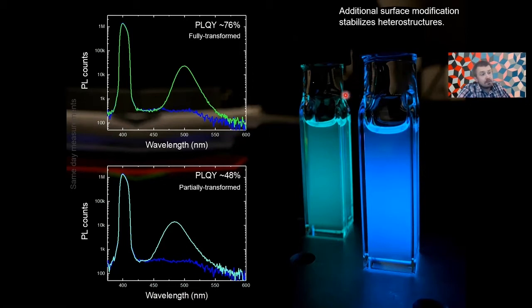There are optical properties. So there are two cuvettes, one with the partially transformed zero-D particles and another one was fully transformed. And they show quite respectable emission, probably among the best we measured in these heterostructures. So about 50% for heterostructures and about 75% on fully transformed ones. Notice that here, cesium lead bromide-3 part is quantum confined because its emission falls below 500 nanometers.